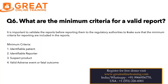Now we will see what these minimum criteria are. The first is an identifiable patient. The report should contain an identifiable patient, an identifiable reporter, a suspect product, and a valid adverse event or fatal outcome. These four are the minimum criteria that any report should contain before submission to the regulatory authorities.